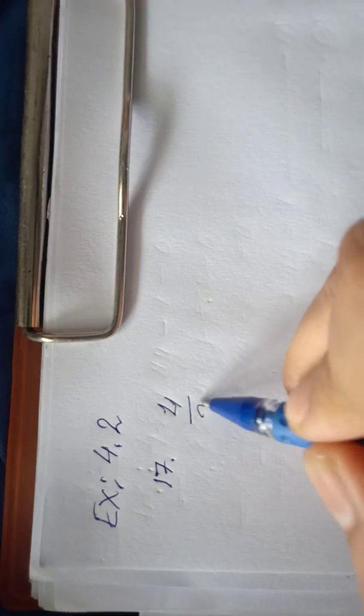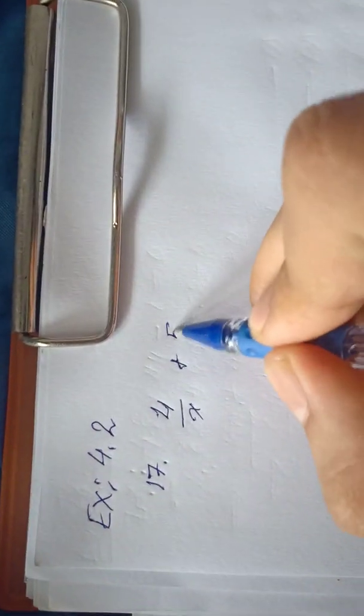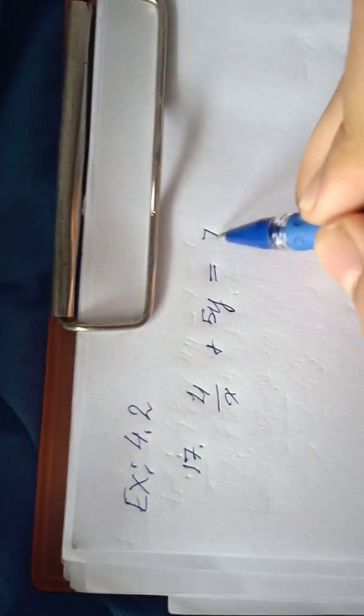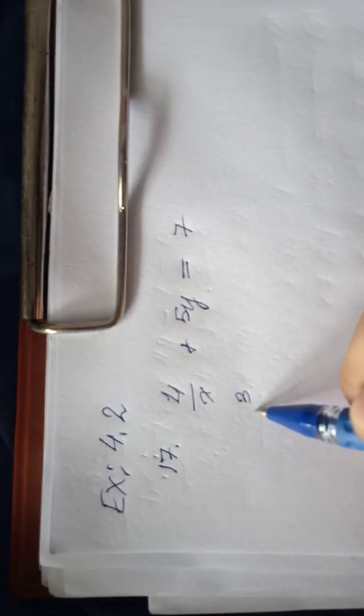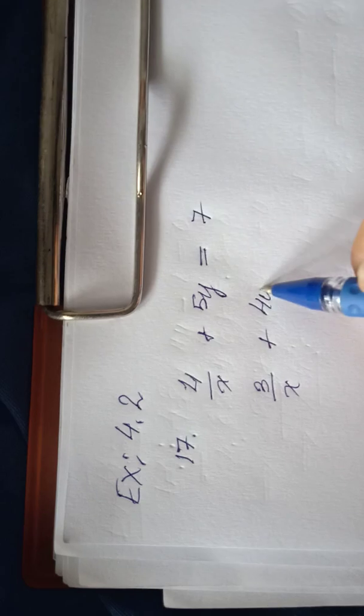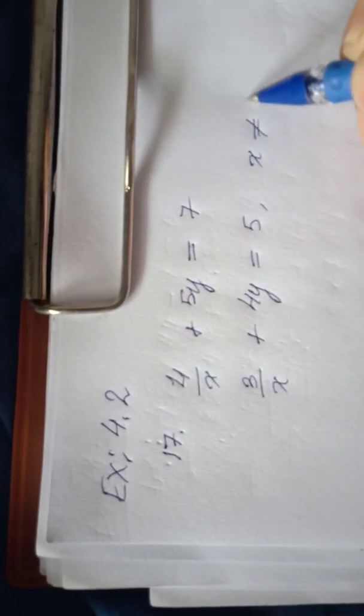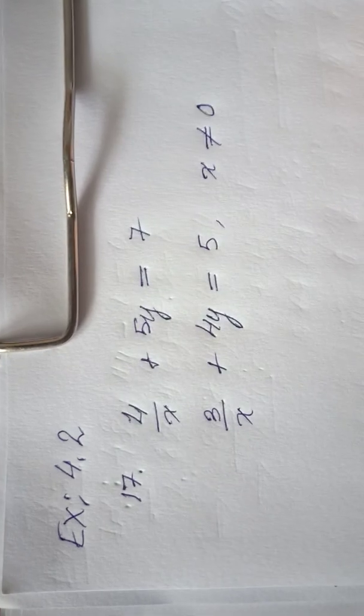Welcome to exercise 4.2, question number 17. We will be solving a linear equation in two variables. The given equations are: 4/x + 5y = 7, and 3/x + 4y = 5, where x is not equal to 0. That means the value of x cannot be 0.